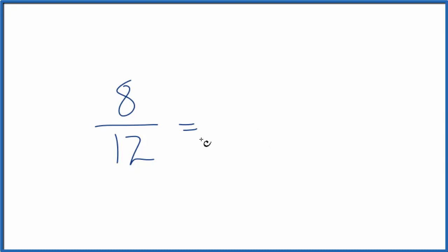So to do that, we could first, I see that 4 would go into 8 two times, and 4 would go into 12. 3 times 4 is 12, so 3 times. So 2 thirds, that's an equivalent fraction to 8 twelfths. We just simplified 8 twelfths.